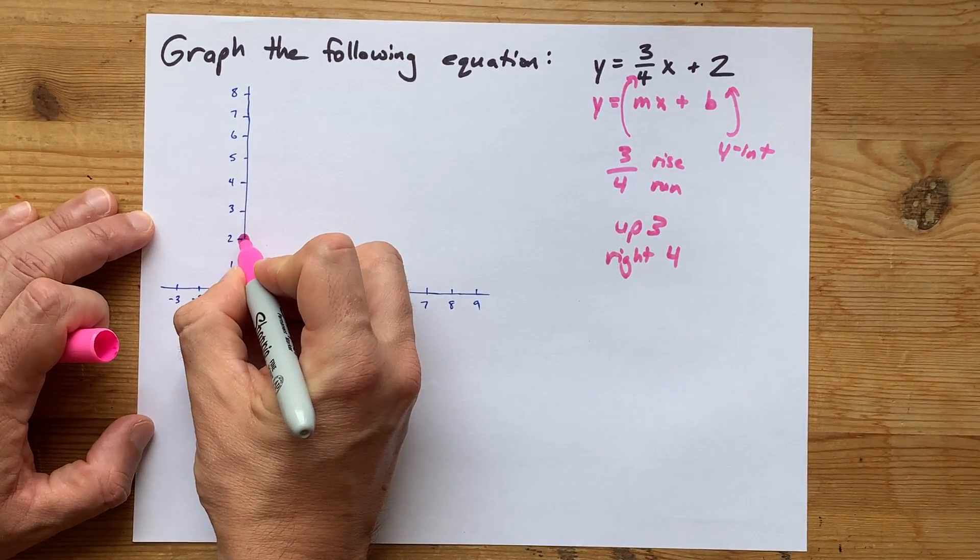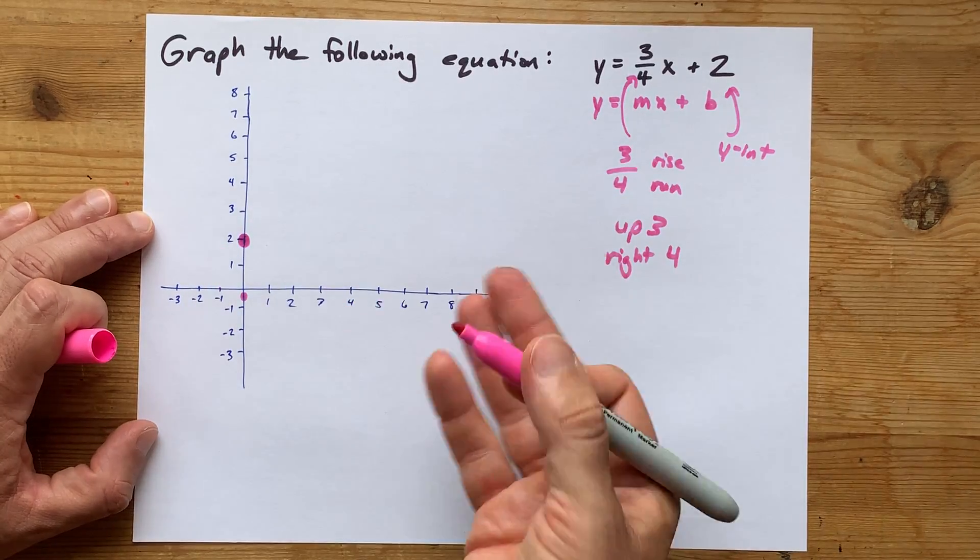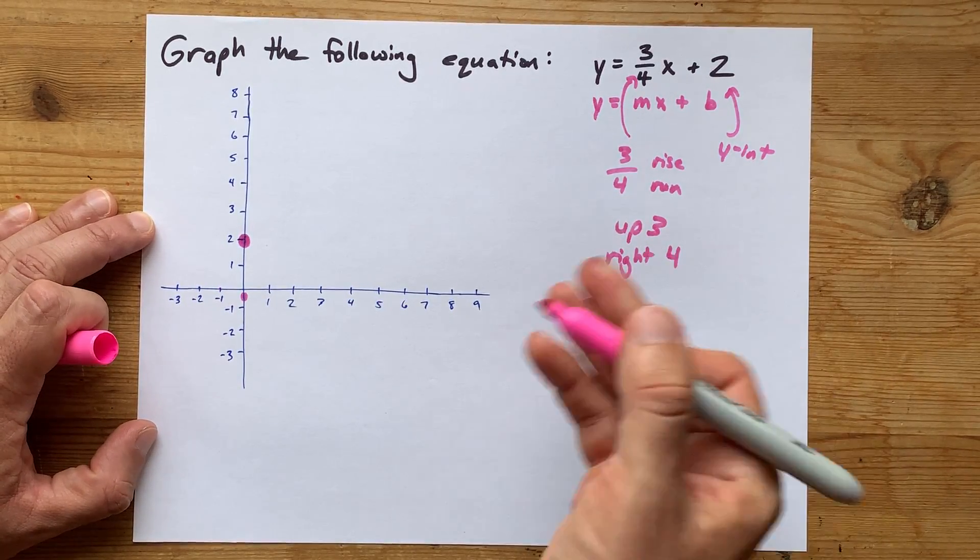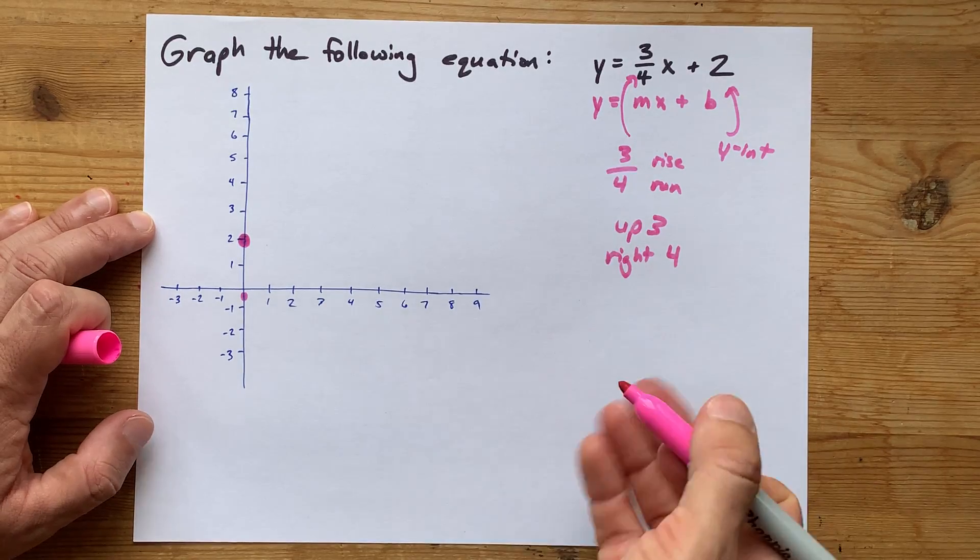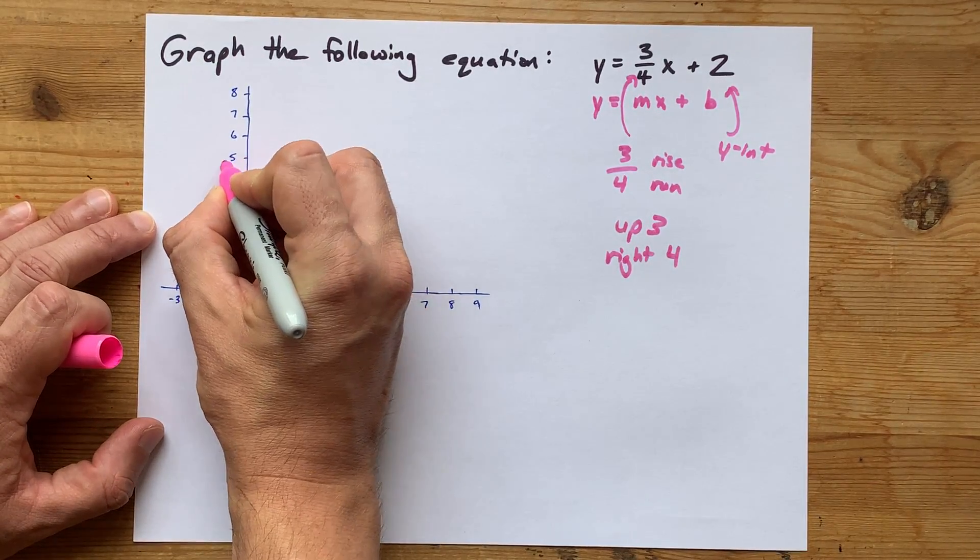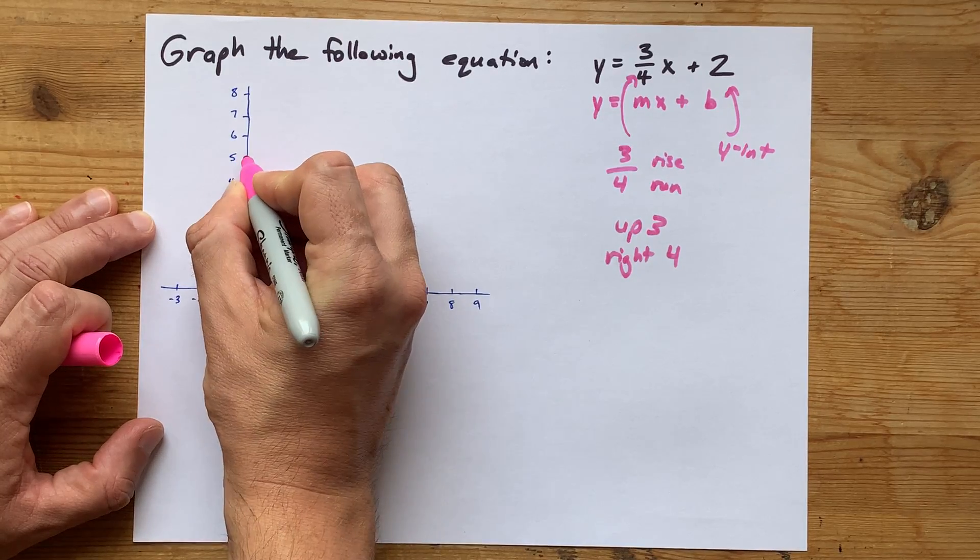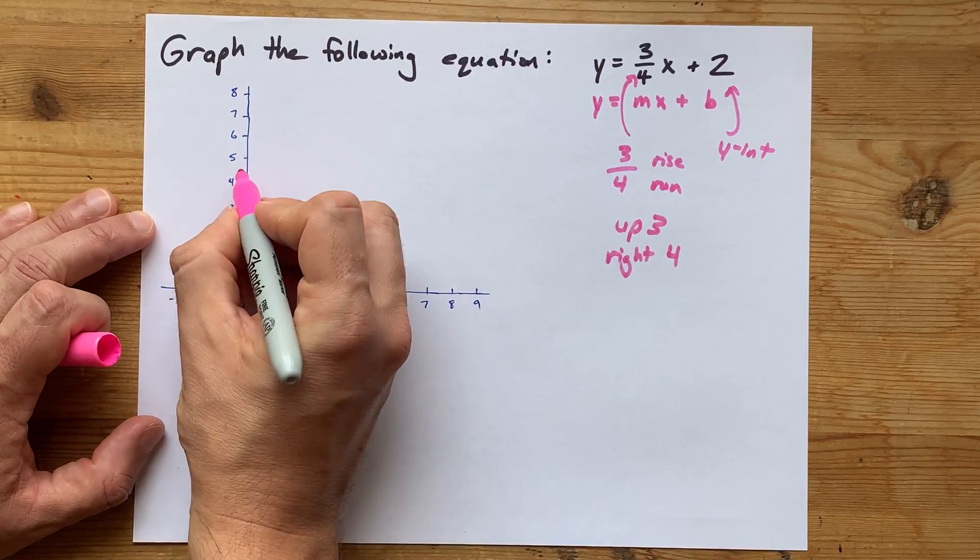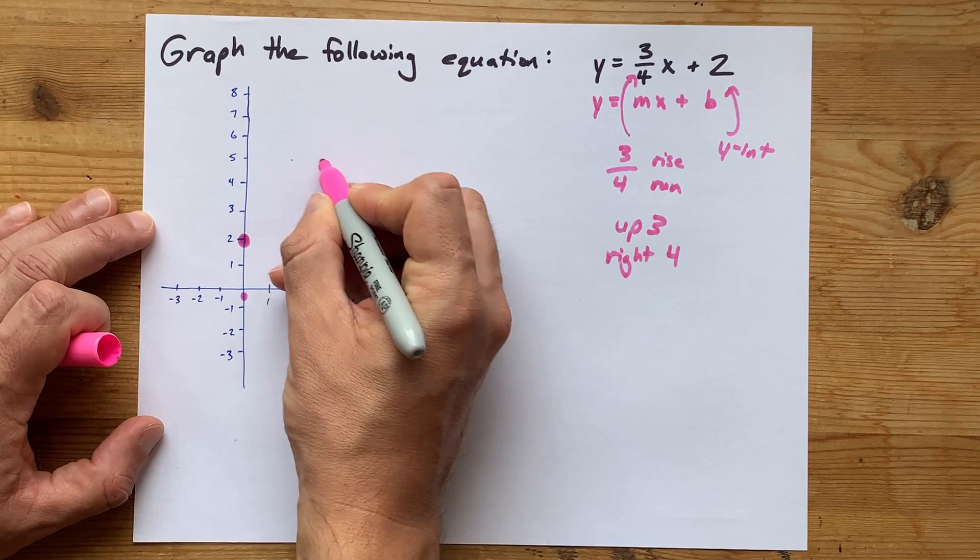We're going to start from this point, the y-intercept, the one that was given, and go up 3, right 4, and that's going to give us another point on the line. So I'm going to go up 1, 2, 3. That takes me up here.